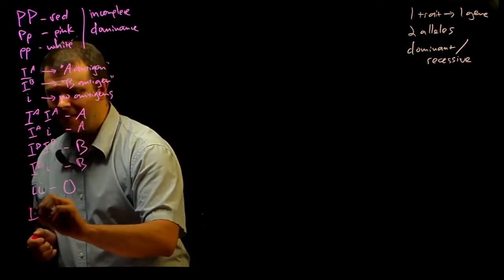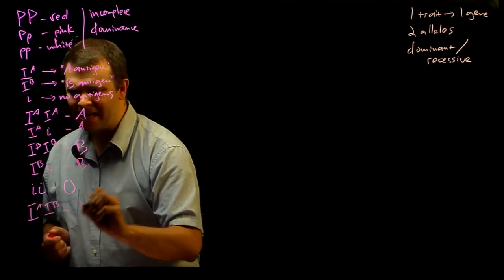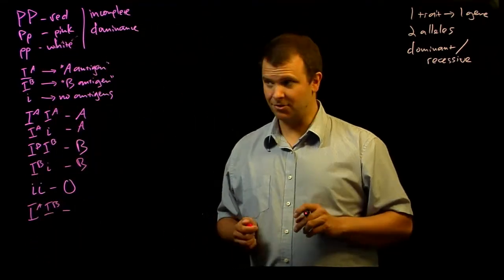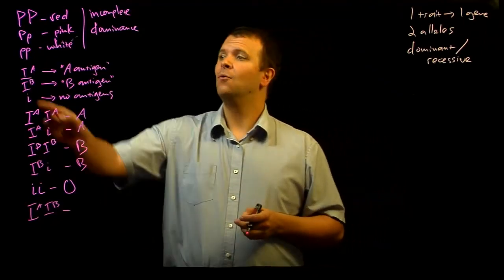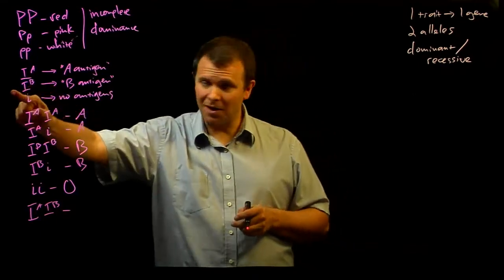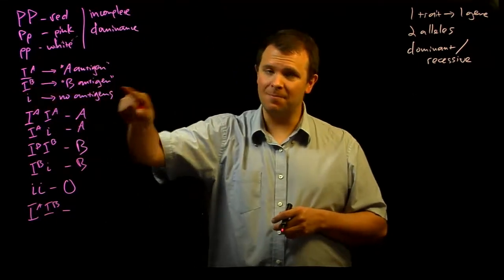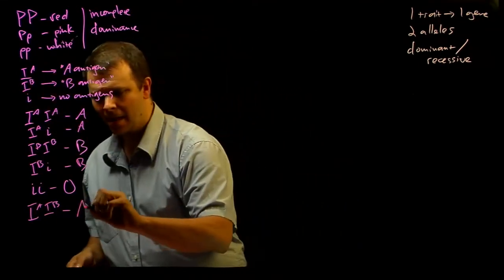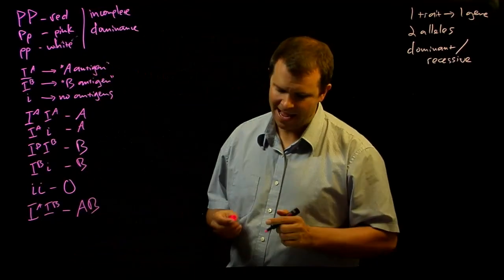But it's the IA, IB heterozygote that's really interesting because now you'll have one allele that's making an enzyme that's making the A antigen and one allele that's making the enzyme that's making the B antigen and your blood type is type AB.